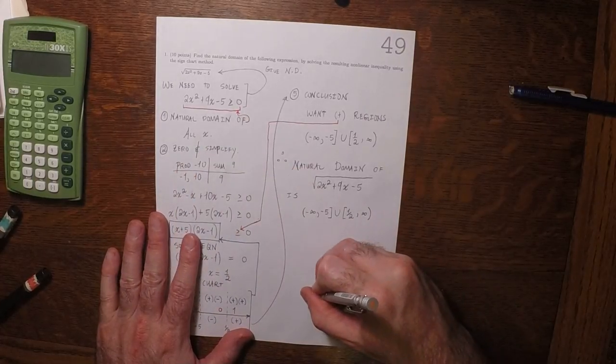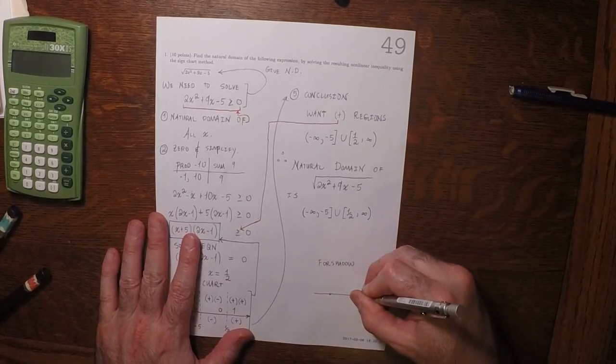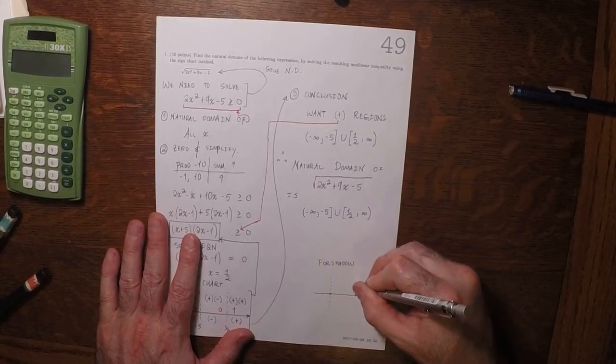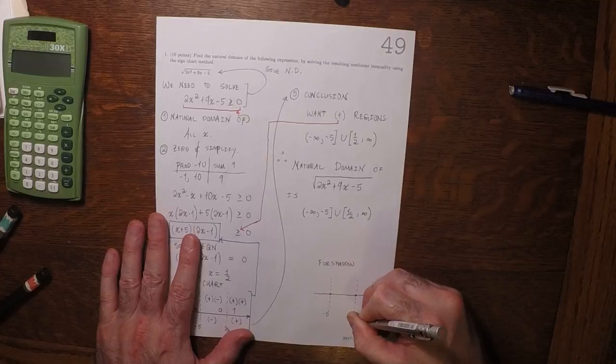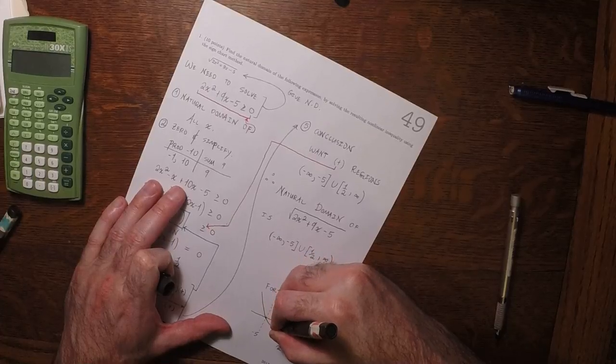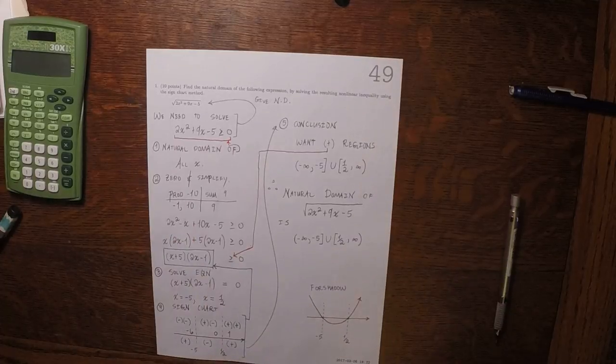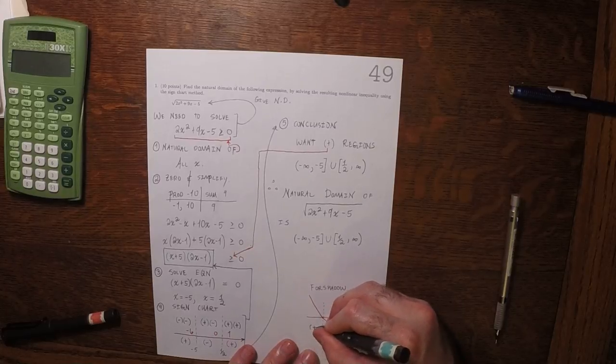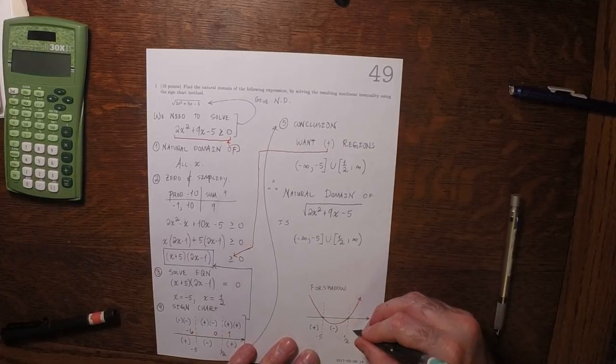that is a quadratic and its plot will look like this. So that's negative 5 and that's half, something like that. And then you can see it's above the axis here so it's positive, it's below the axis here so it's negative, it's above the axis in the next region so it's positive.